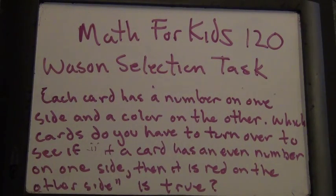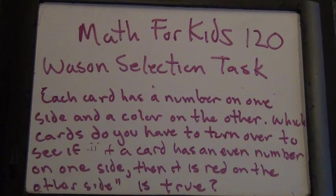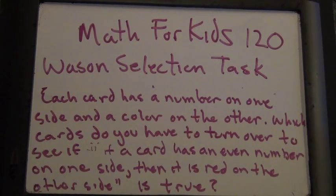120! Wow, I can't believe we've done 120 of these. You know anything special about the number 120? Not really. It's 5 factorial. Do you remember what factorial means? Five exclamation points — five times four times three times two times one. Yeah, that's 120.